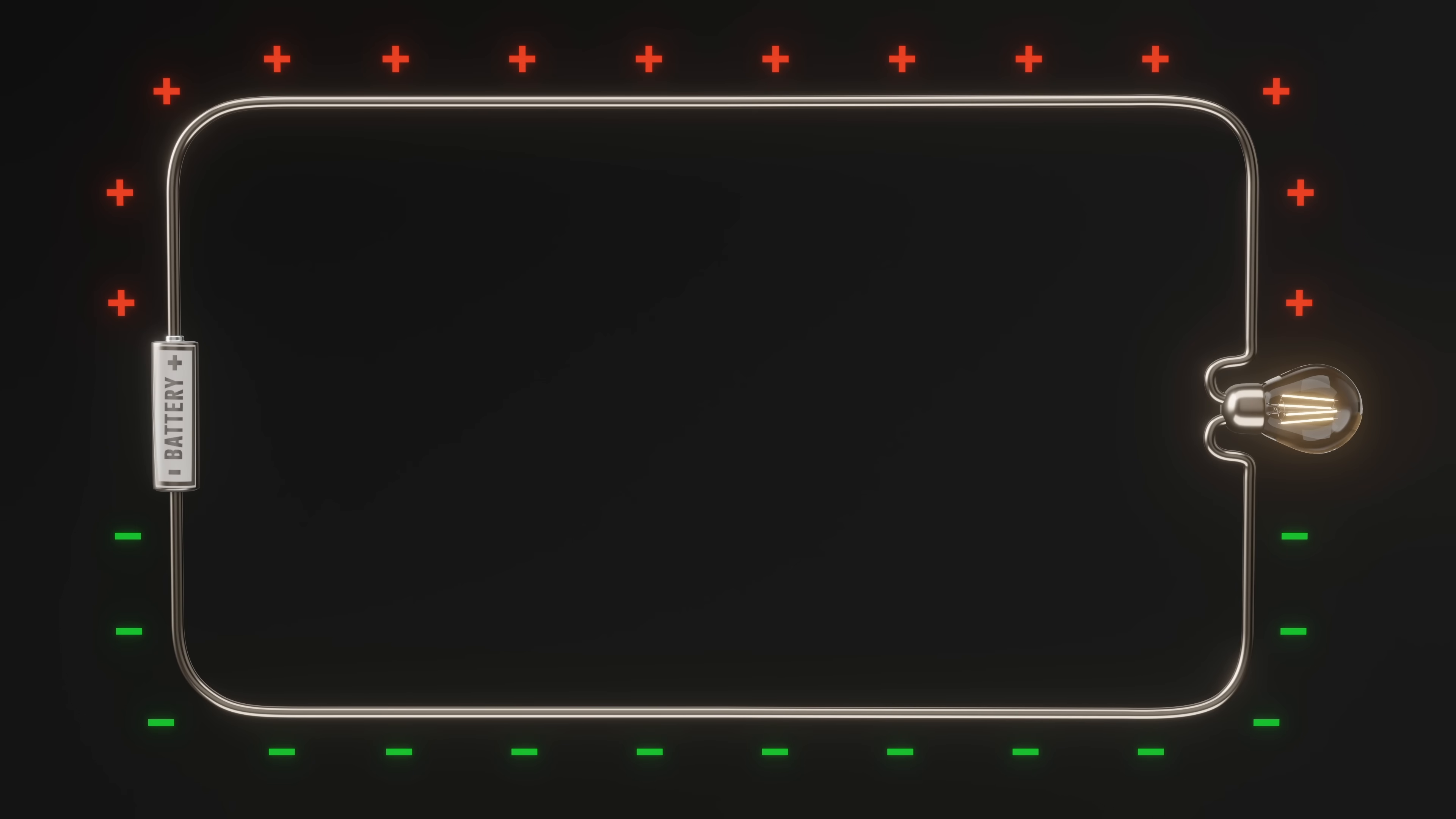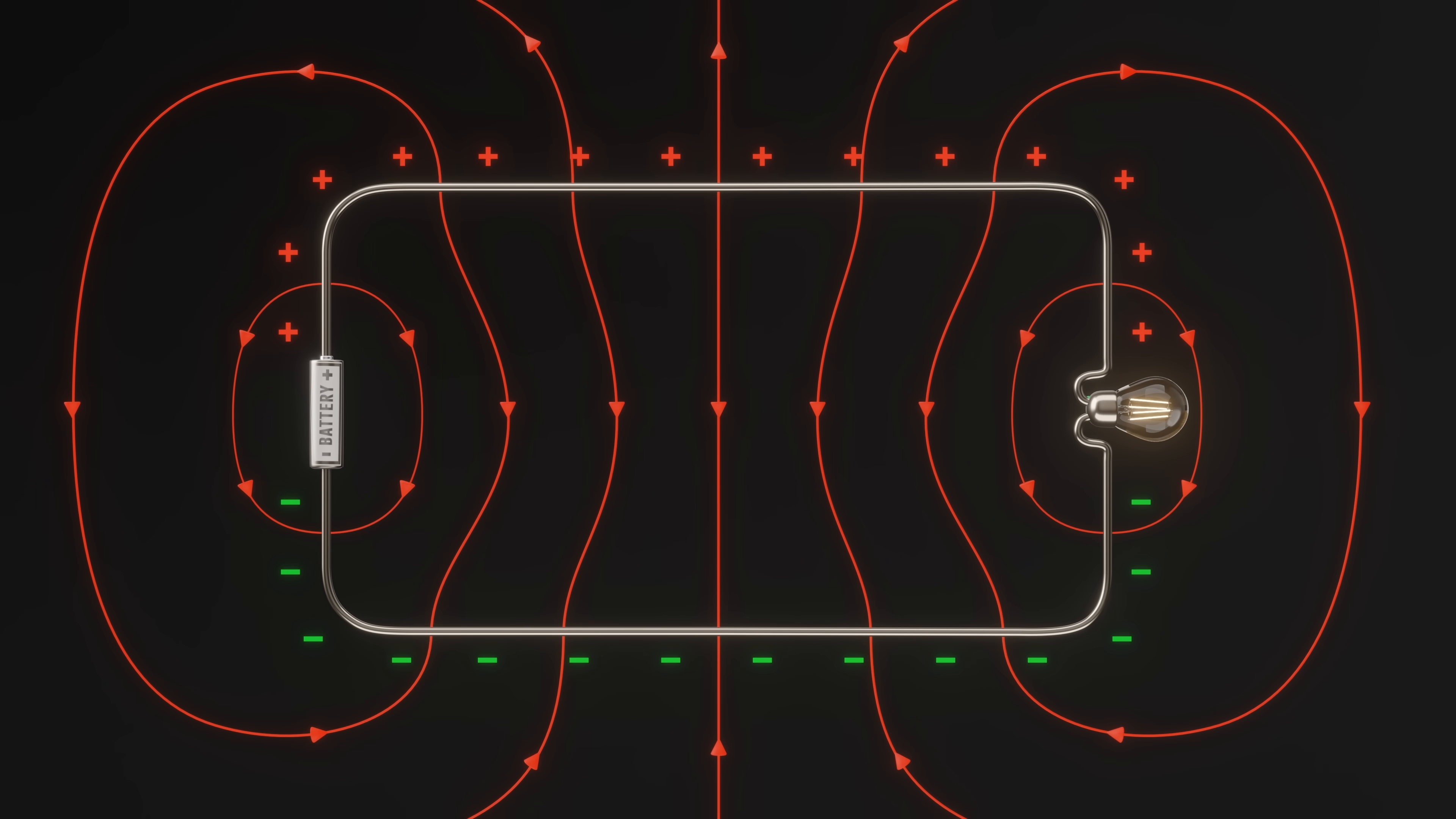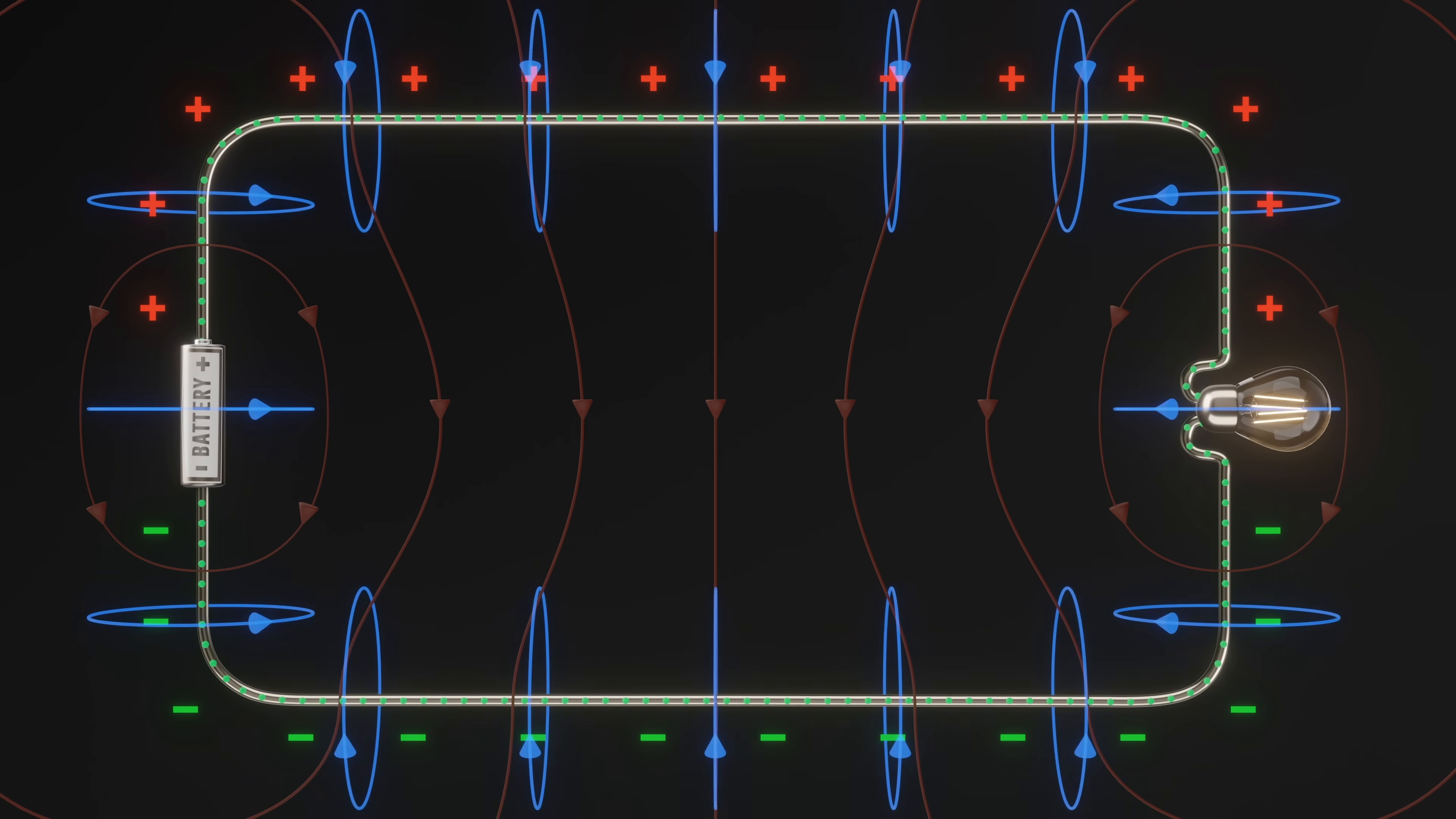These surface charges create a small electric field inside the wires causing electrons to drift preferentially in one direction. Note that this drift velocity is extremely slow, around a tenth of a millimeter per second, but this is current. Conventional current is defined to flow opposite the motion of electrons, but this is what's making it happen. The charge on the surfaces of the conductors also creates an electric field outside the wires, and the current inside the wires creates a magnetic field outside the wires.